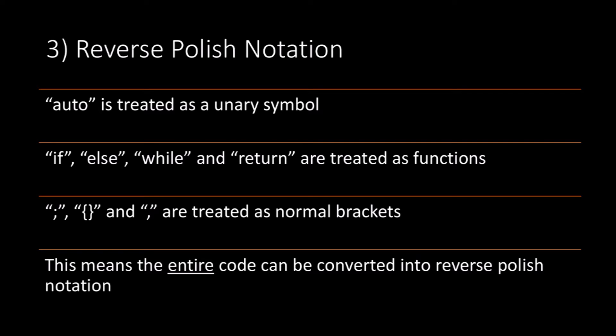Auto can be treated as a unary symbol. If, else, while, and return can all be treated as functions. Semicolon, squiggly brackets, and comma can all be treated as normal brackets. By doing this, the entire code can be converted into a reverse Polish form.